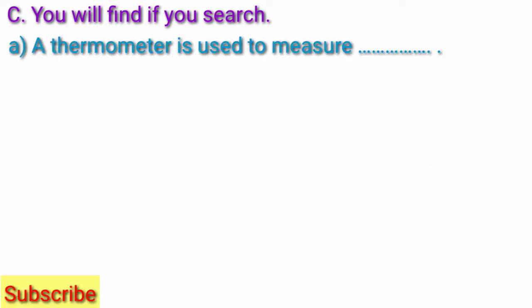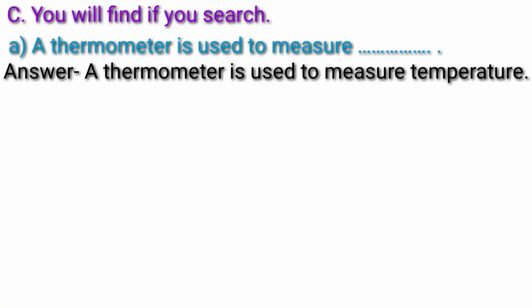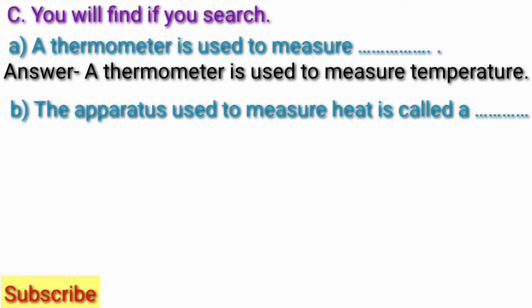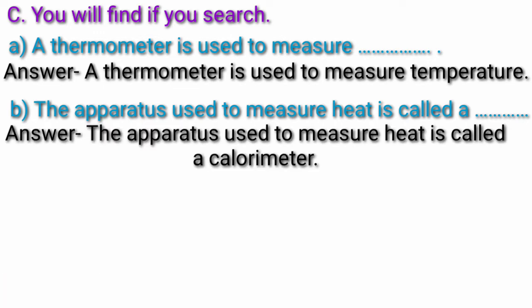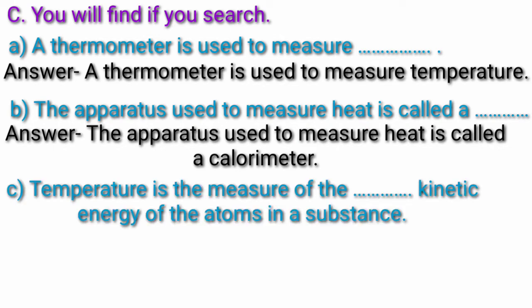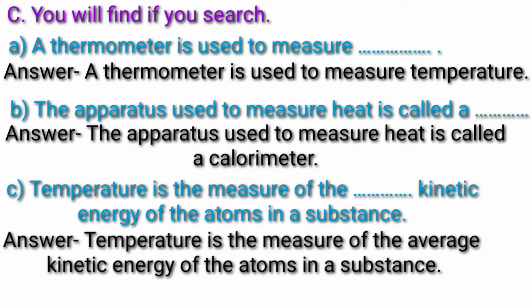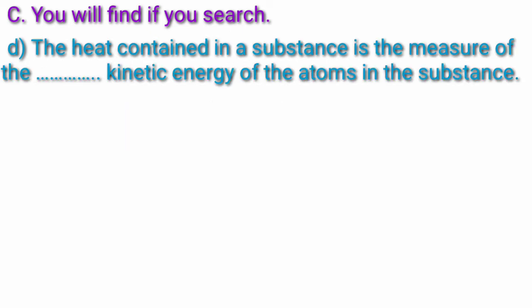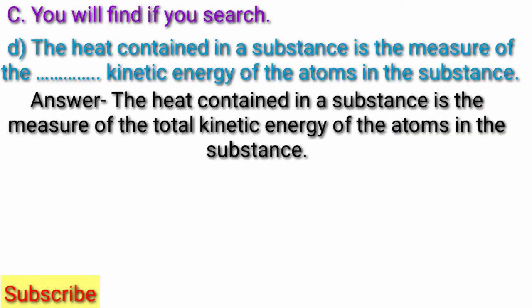Question 1C: Fill in the blanks. Question A: A thermometer is used to measure temperature. Question B: The apparatus used to measure heat is called a calorimeter. Question C: Temperature is the measure of the average kinetic energy of the atoms in a substance. Question D: The heat contained in a substance is the measure of the total kinetic energy of the atoms in the substance.